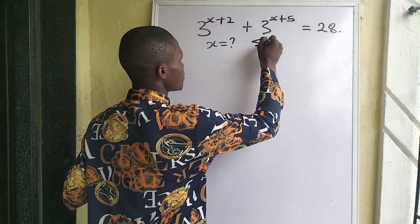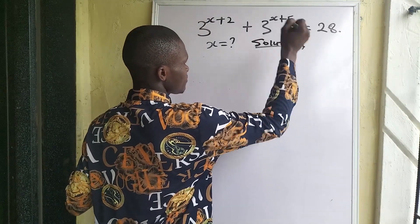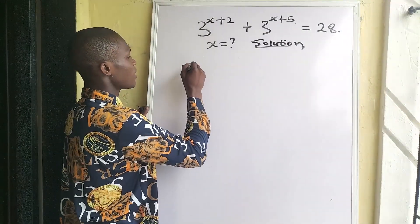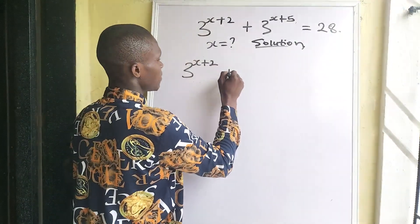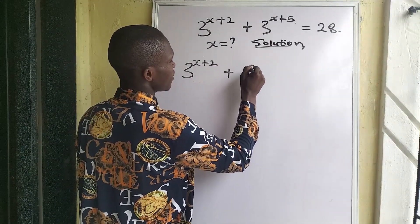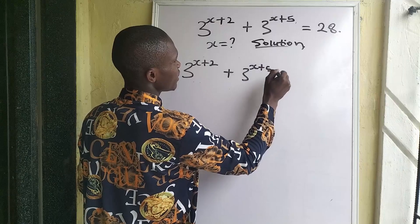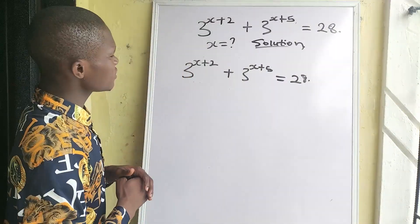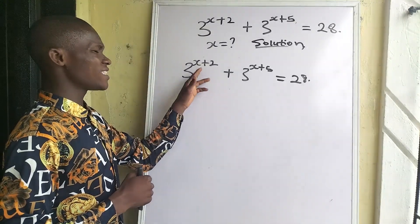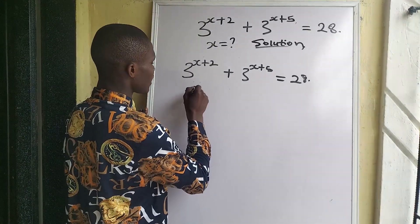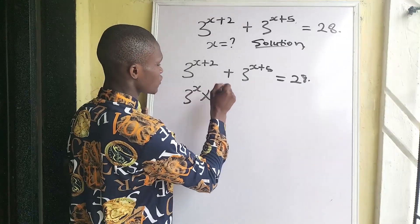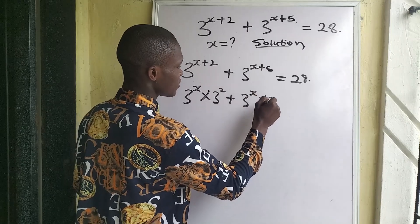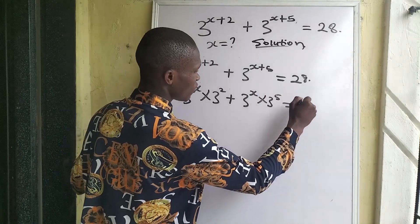Let's dive into the solution. We write down our equation which says 3 to the power of x plus 2 plus 3 to the power of x plus 5 equals 28. We can rewrite this as 3 to the power of x times 3 to the power of 2, plus 3 to the power of x times 3 to the power of 5, equal to 28.